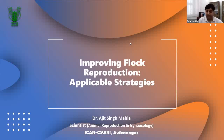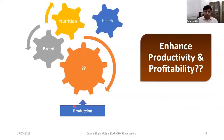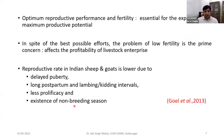Improving flock reproduction — applicable strategies — not only in the non-organized sector; organized people are also not aware about reproduction. When we talk about reproduction of Indian sheep and goat, it's very low due to delayed puberty, long lambing and kidding intervals, less prolificacy, and existence of non-breeding season in some areas. Due to these reasons, we are not able to exploit the production potential of these animals.